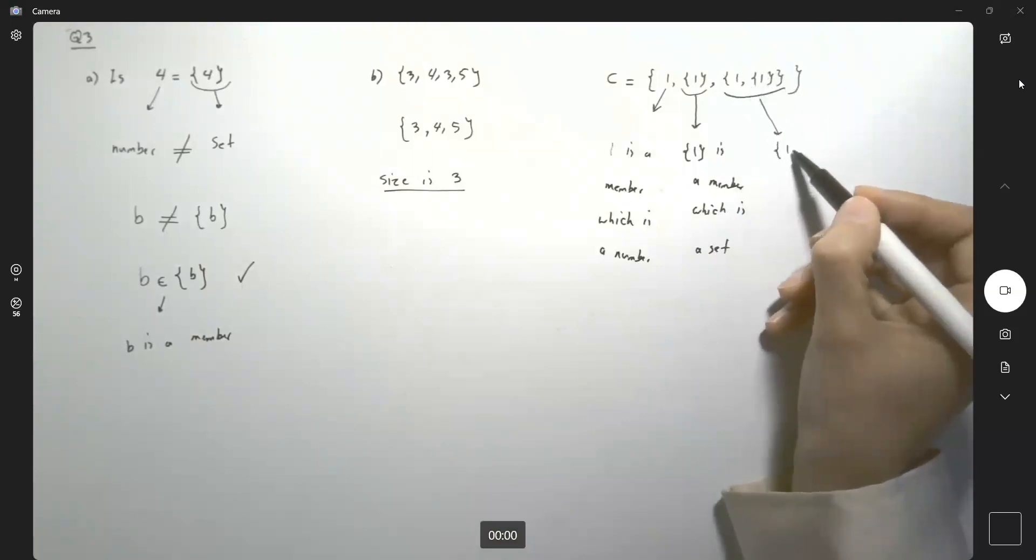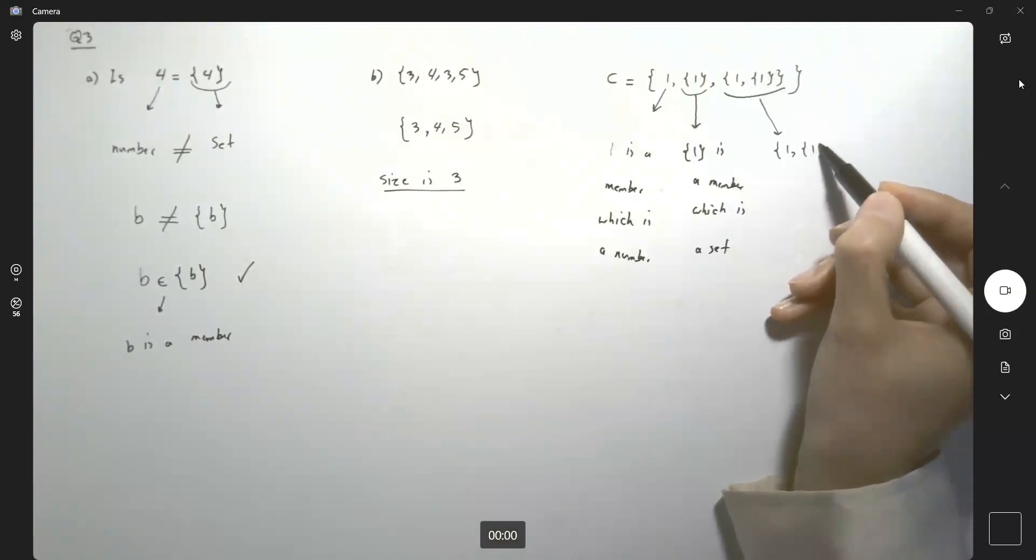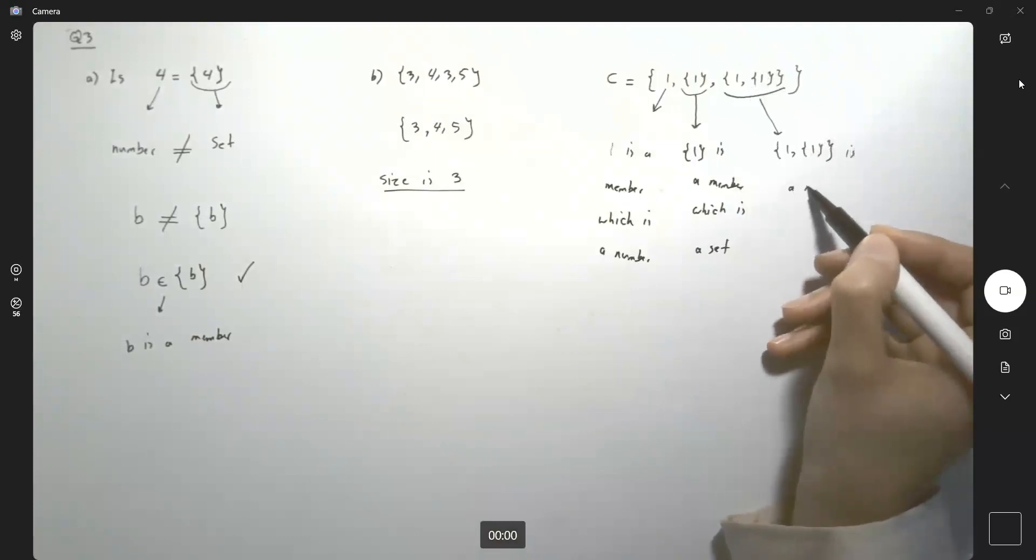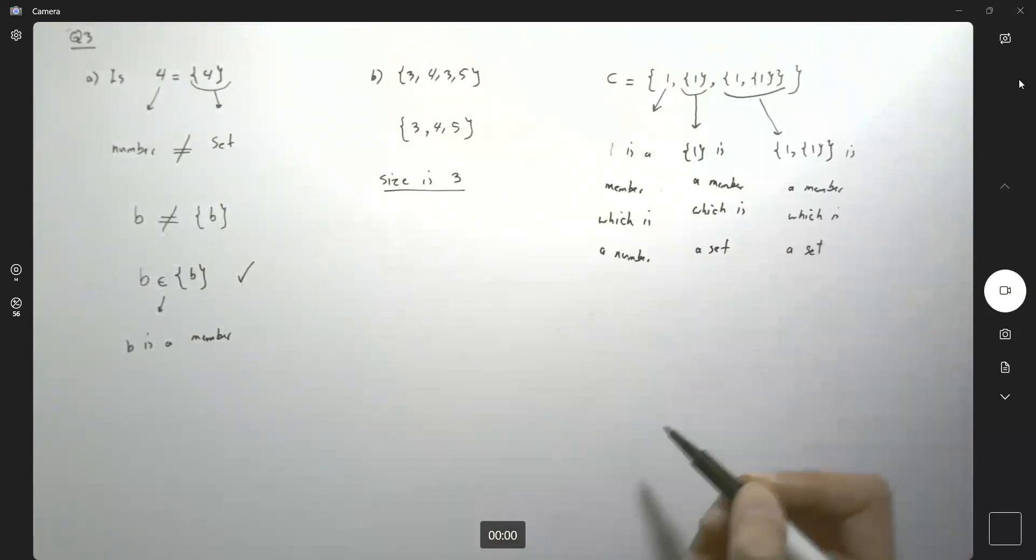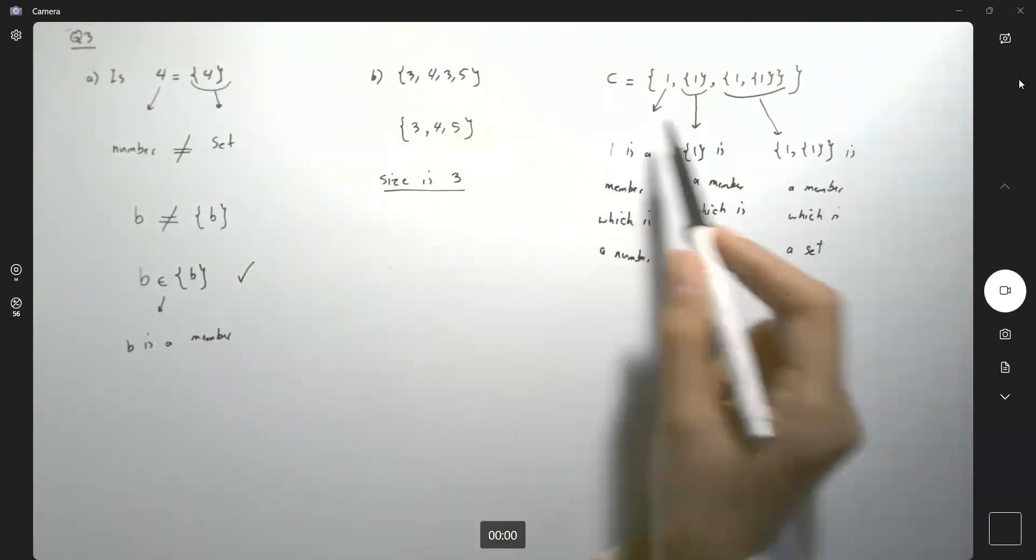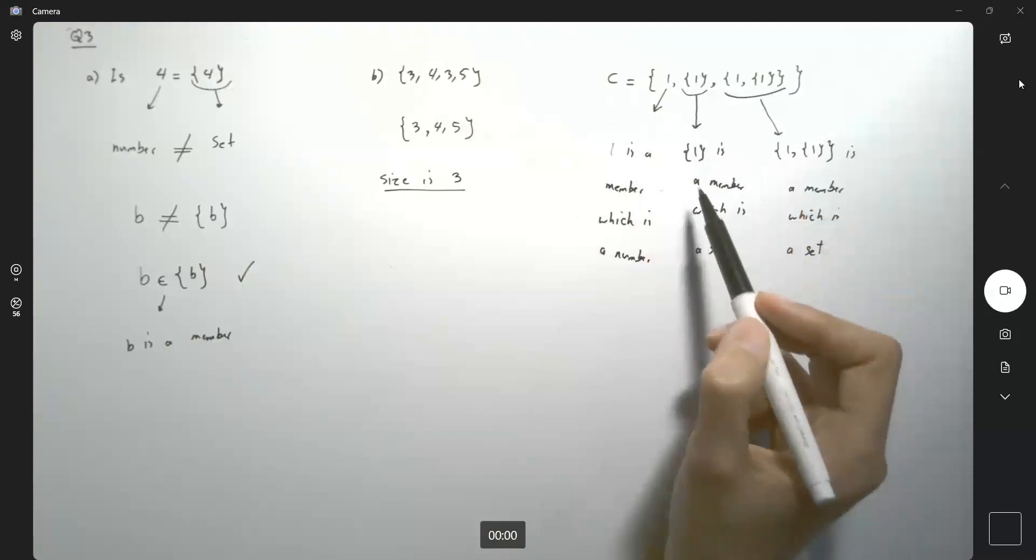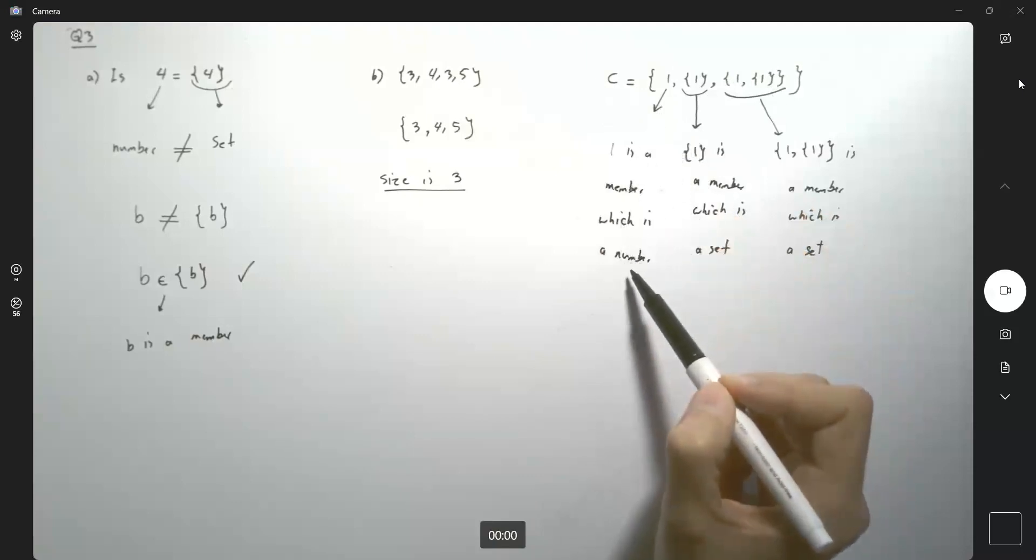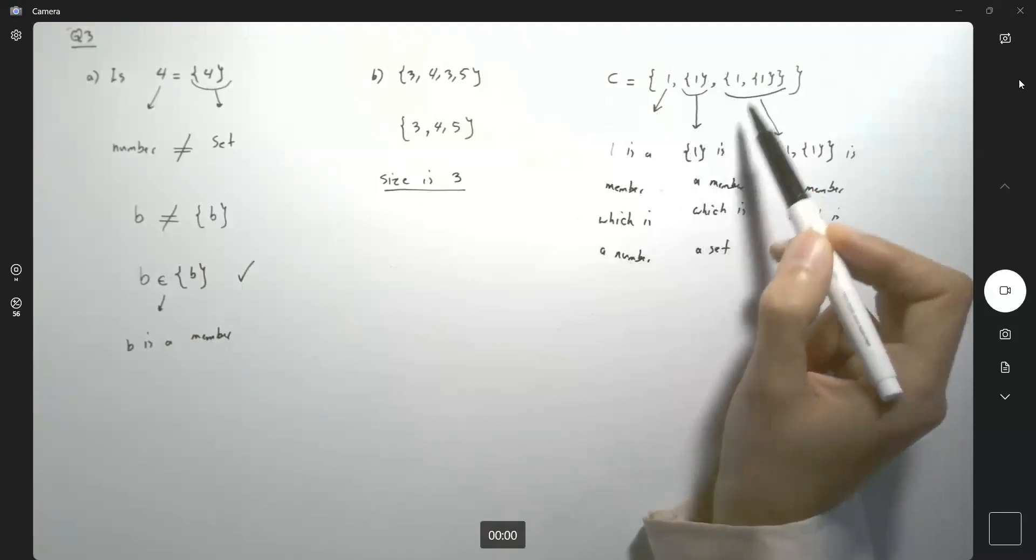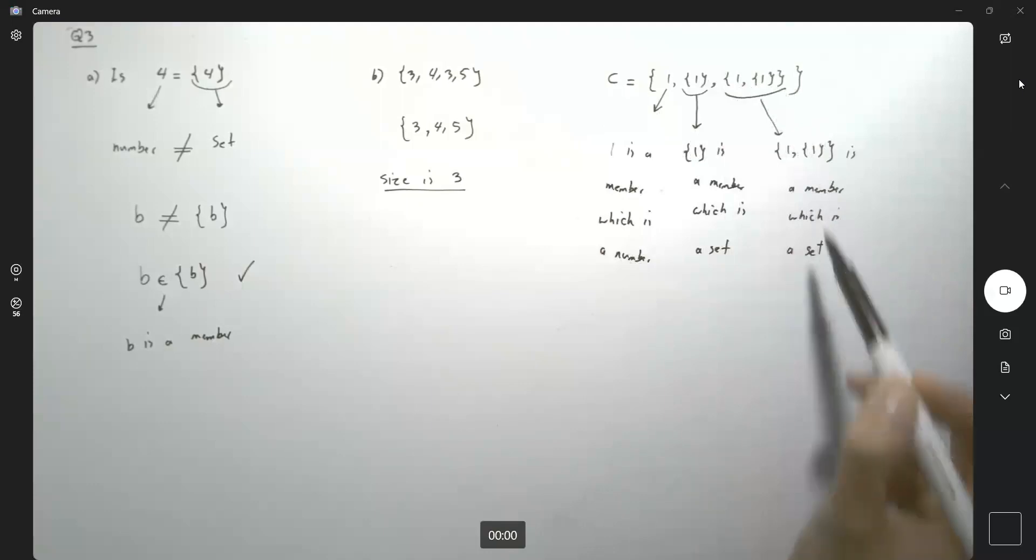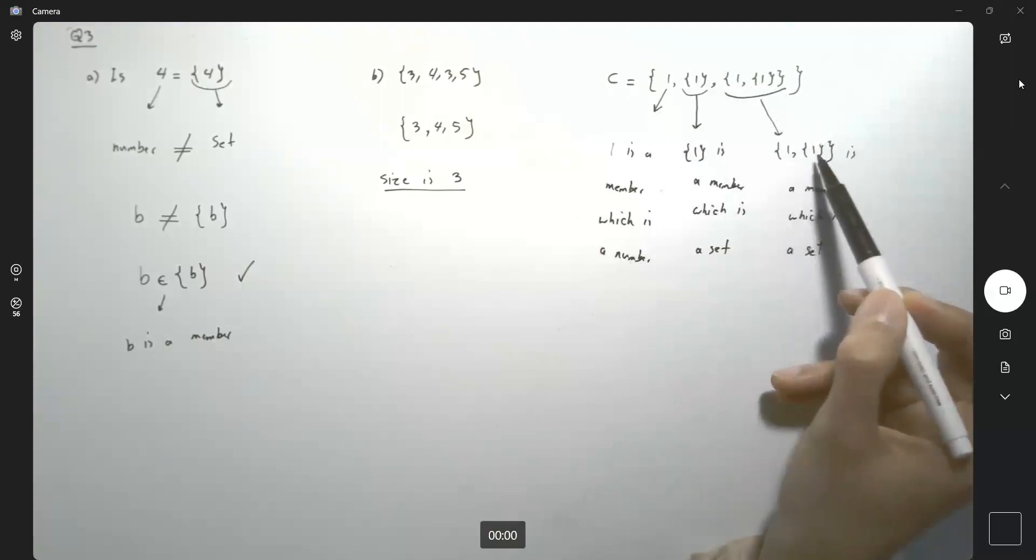So set including one, and set one is a member, which is also a set. So set C has three members. One of them is just a basic number. The second one is a set of cardinality 1, and the third member is a set with cardinality 2, because it has two members.